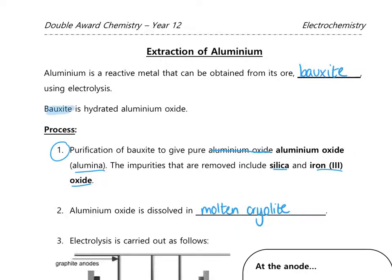The aluminium oxide formed from purification is then dissolved in something called molten cryolite. Cryolite is a chemical used in molten liquid form because the electrolyte — the aluminium oxide — needs to be molten for electrolysis to work, so the ions are free to move to the different electrodes. We'll come back to the purpose of molten cryolite shortly.